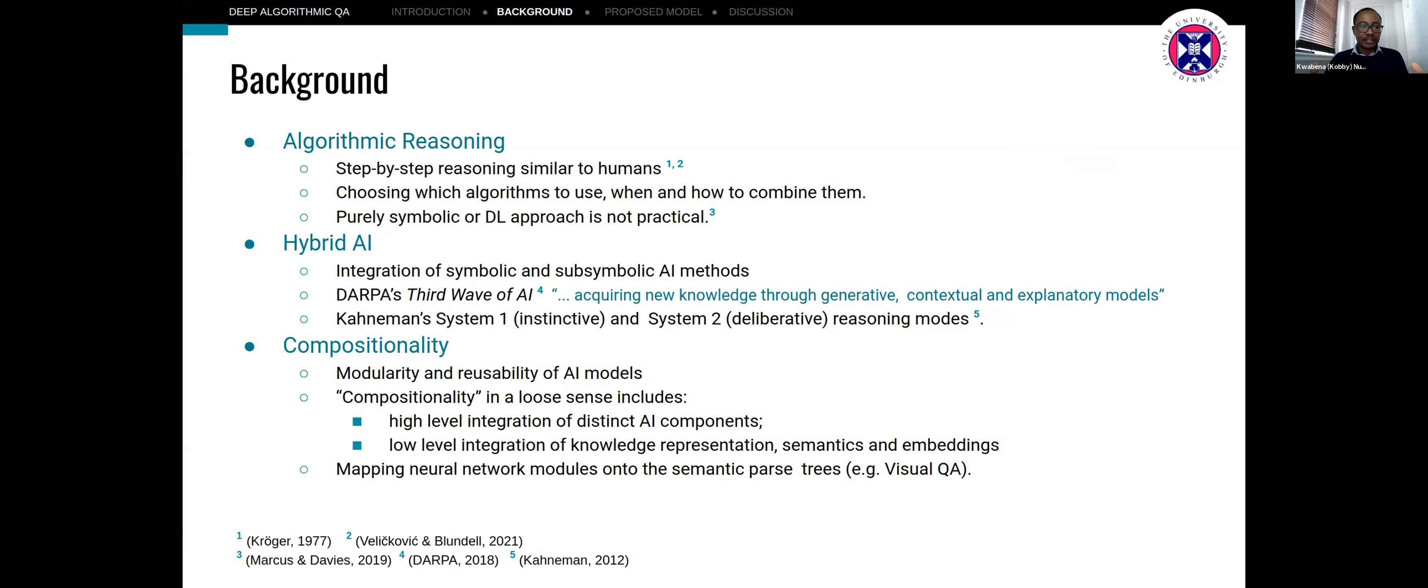Algorithmic reasoning basically focuses on step-by-step reasoning similar to how humans handle tasks, mostly how we choose algorithms and how we combine them. As I said before, purely symbolic or deep learning approaches are not enough to handle this problem.